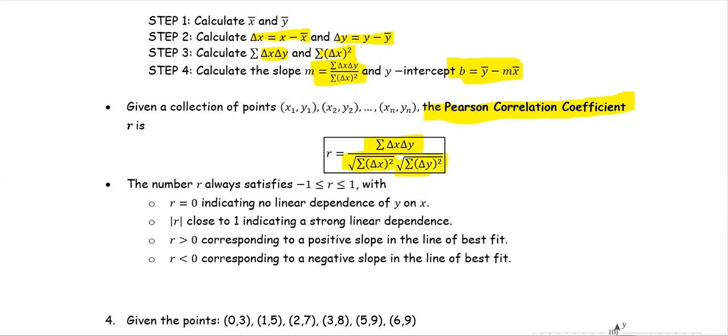The number r always satisfies negative 1 less than or equal to r less than or equal to 1, with r equals 0 indicating no linear dependence of y on x. The absolute value of r close to 1 indicates strong linear dependence. R greater than 0 corresponds to a positive slope in the line of best fit, while r less than 0 corresponds to a negative slope.